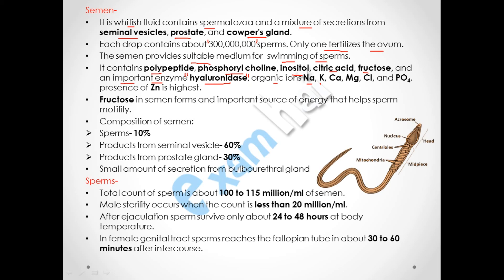Semen also contains organic ions such as sodium, potassium, calcium, magnesium, chlorine, phosphate (PO4), and zinc — with zinc present at the highest concentration. Fructose in the semen is the source of energy that helps the sperm for motility. The composition of semen is: 10% sperm from the testes, 60% secretion from the seminal vesicle, 30% secretion from the prostate gland. The small amount from the bulbourethral gland is not counted in these percentages.